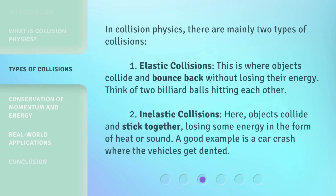In collision physics, there are mainly two types of collisions. First, elastic collisions. This is where objects collide and bounce back without losing their energy. Think of two billiard balls hitting each other.